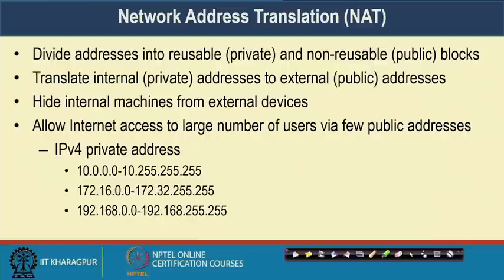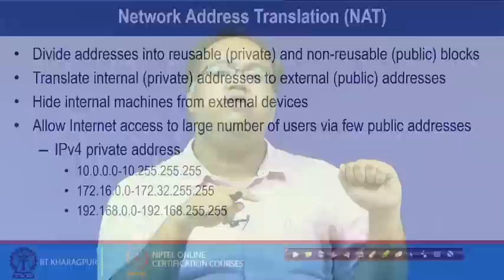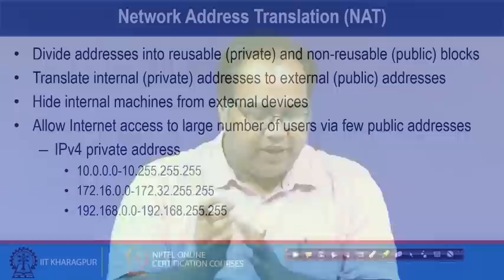To transfer the packet, you need a translation mechanism to translate the internal or private address to the external or public address. This also hides internal machines from external devices, because external people are not able to see whether the mail is going to Sondip Chakraborty or Shomoke Ghosh — rather they just see that the mail is going to IIT Kharagpur. IIT Kharagpur now becomes the public identity.